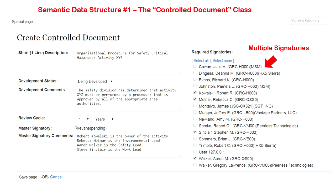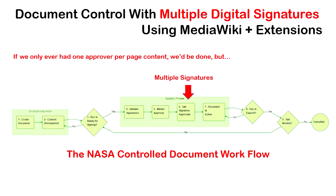That list of signatories is part of an approved revision of the master document and can't be changed after that without invalidating the approval. I'm checking to make sure that the person who approved the page is the person who created the page — if the approver is not the page creator, you'll never get valid signatures down the road.